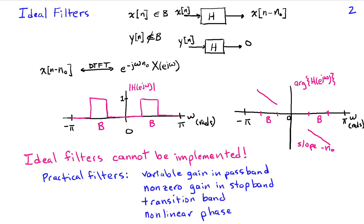So with a practical filter, we have several different deviations from these ideal characteristics. Typically we're going to have some variable gain in the pass band. It won't be exactly one, but it might vary a bit.